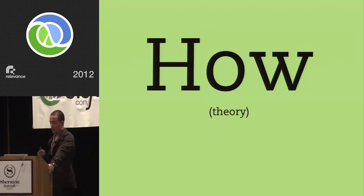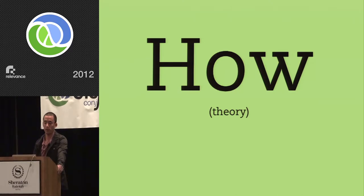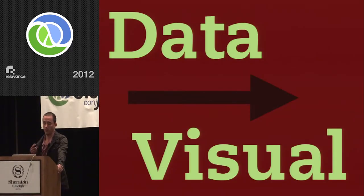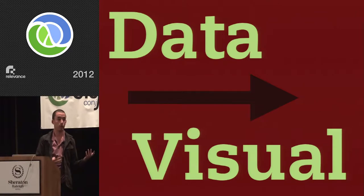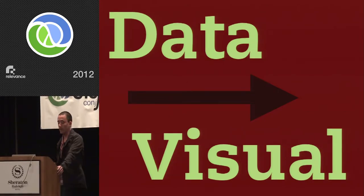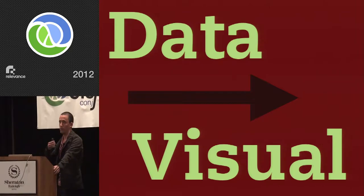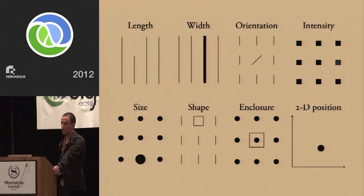I want to talk quickly about the how of data visualization and the theory. What data visualization really is, fundamentally, is a mapping from some data to different visual aesthetics. You guys are familiar with what data looks like — a SQL table, a vector of maps, or whatever. When I say visual aesthetics, I mean there are a number of different dimensions we can use to display quantitative data: the length of a line, the width of a line, the size of an object, the hue or intensity of a color.